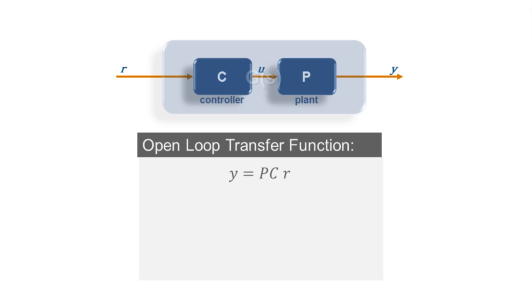If what we want is our output Y to track the desired reference R, then we might think that the easiest solution would be to just make C the inverse of P. This will make Y exactly equal to R, which in principle sounds like what we want, but in practice it's not a very good idea.